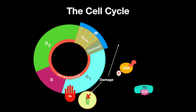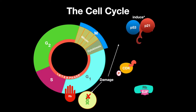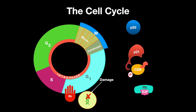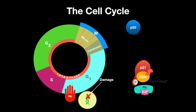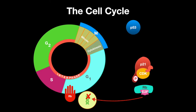P53 is the main tumor suppressor gene. If there is damage to the DNA, P53 will induce P21, which will inhibit CDK. With CDK inhibited, retinoblastoma will not be phosphorylated, and the transcription factors will not bind to the DNA to progress into the S phase.